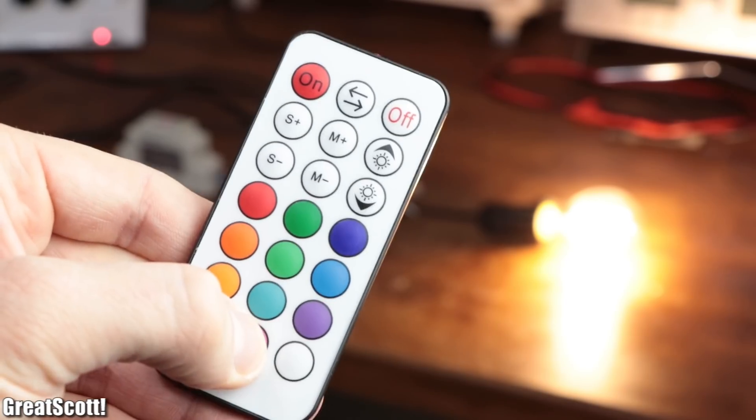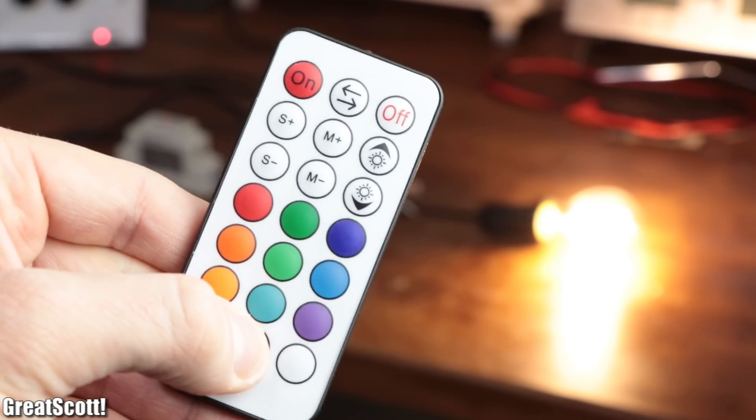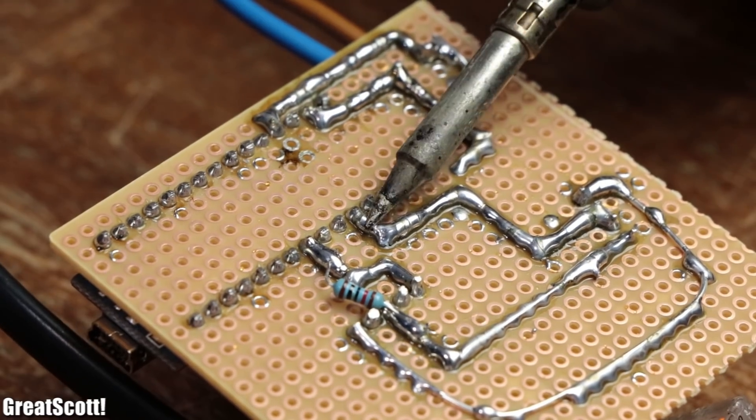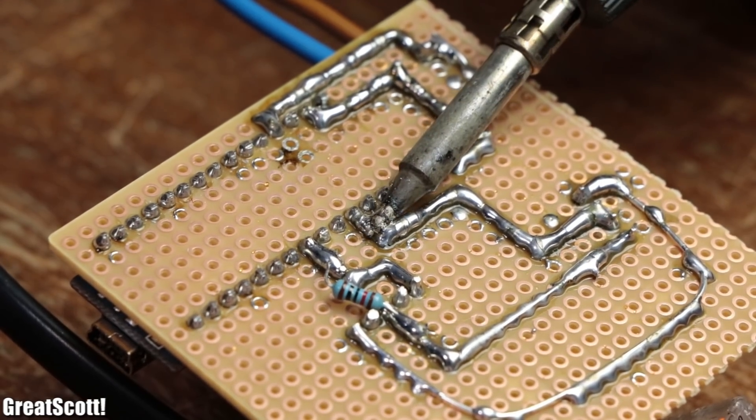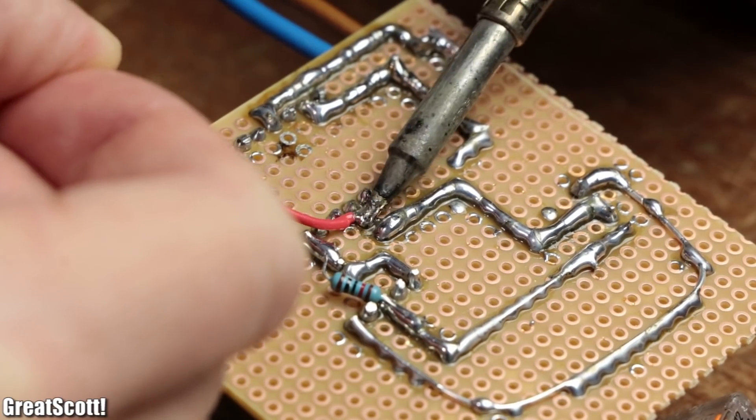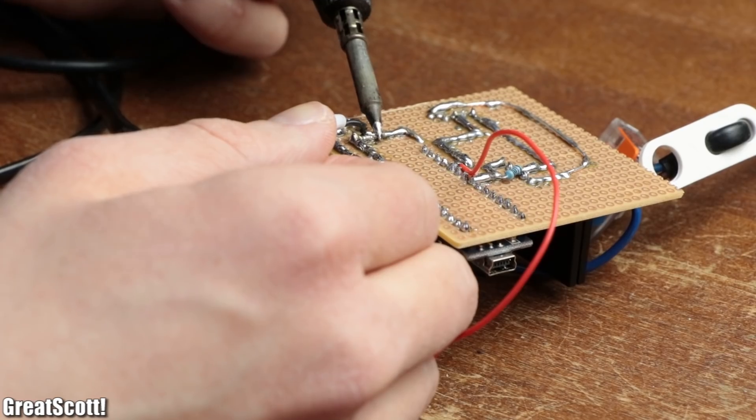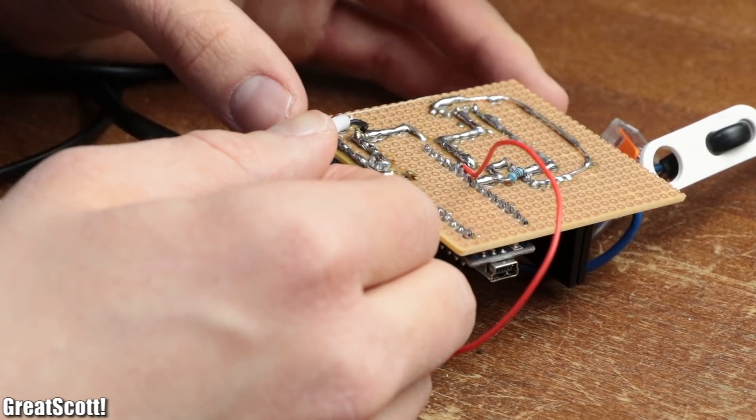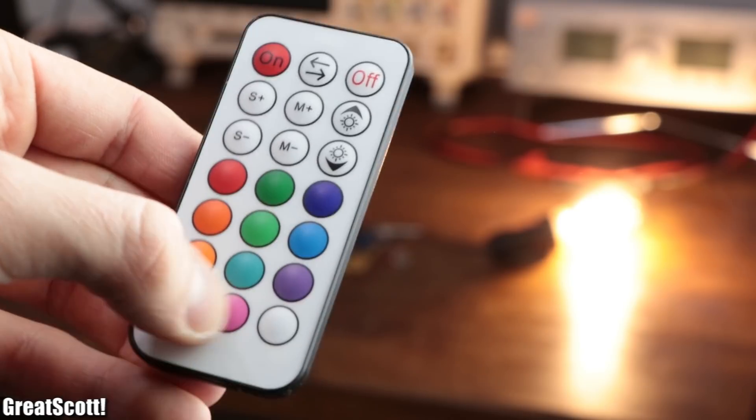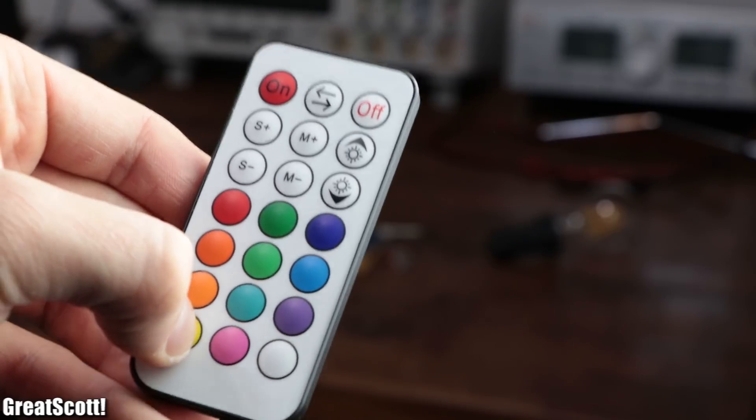But later I realized that the receive range of the circuit was quite horrible. So as an afterthought I was pretty much forced to remove its data signal to the Arduino and replace it with the data output of the previous receiver circuit which I had to hook up to 5V power as well. This way the range of the transmitter and receiver system was drastically improved.